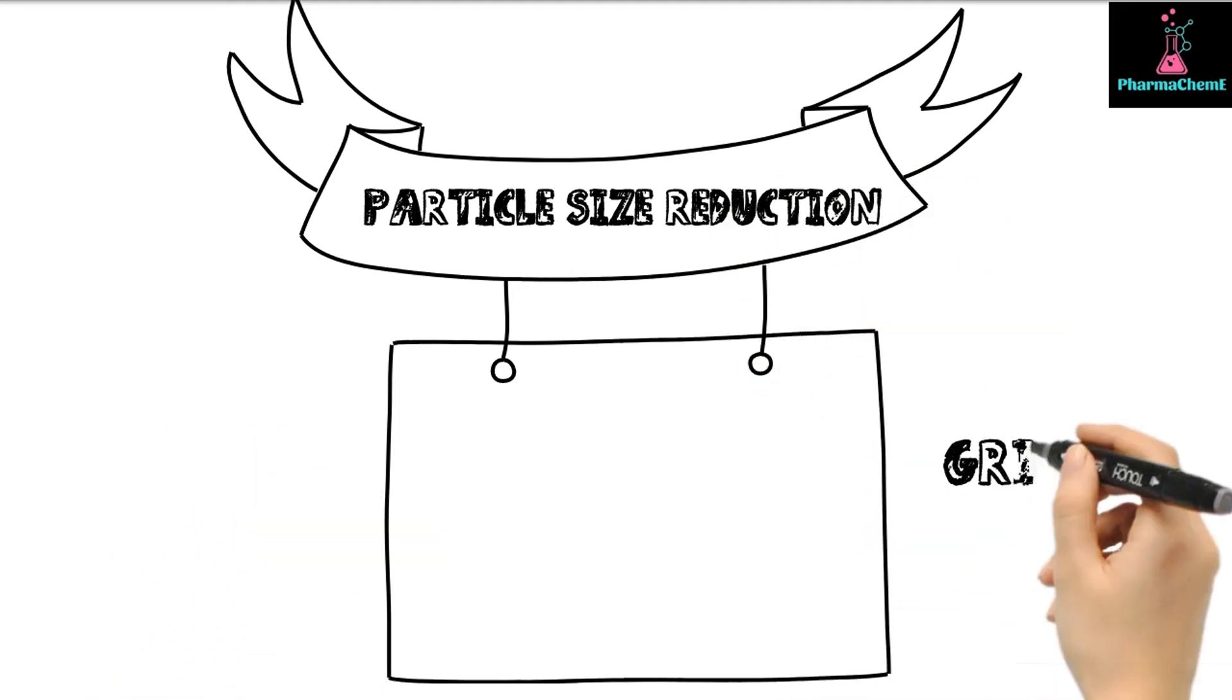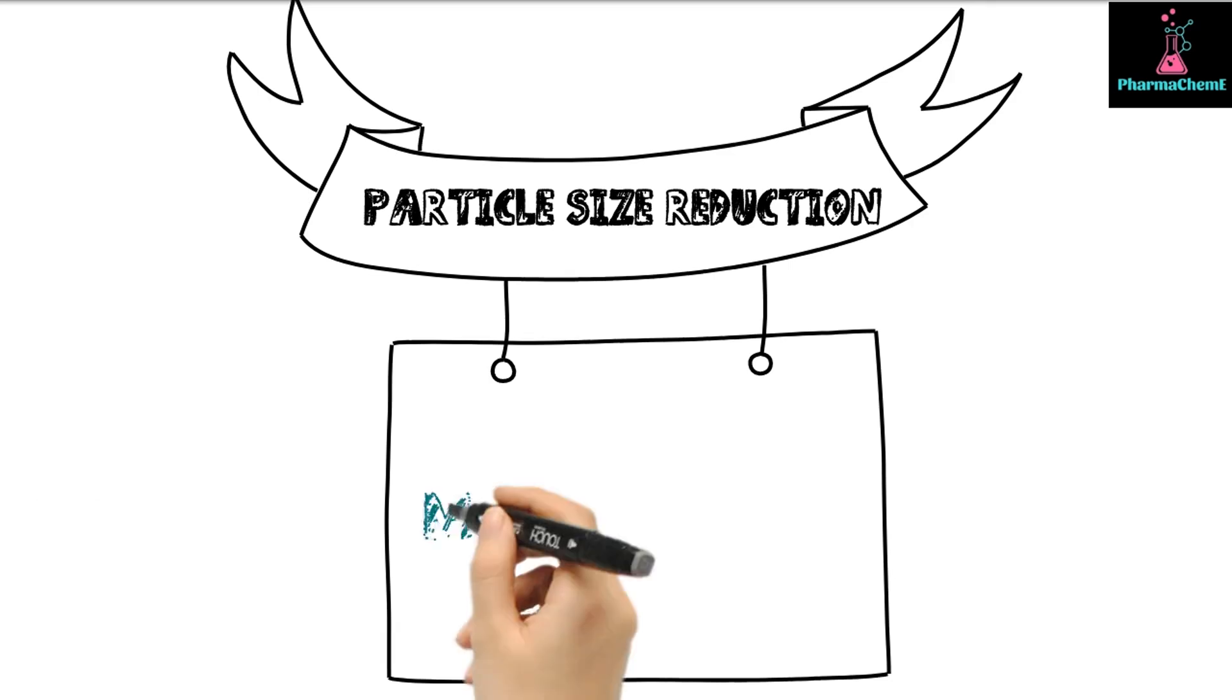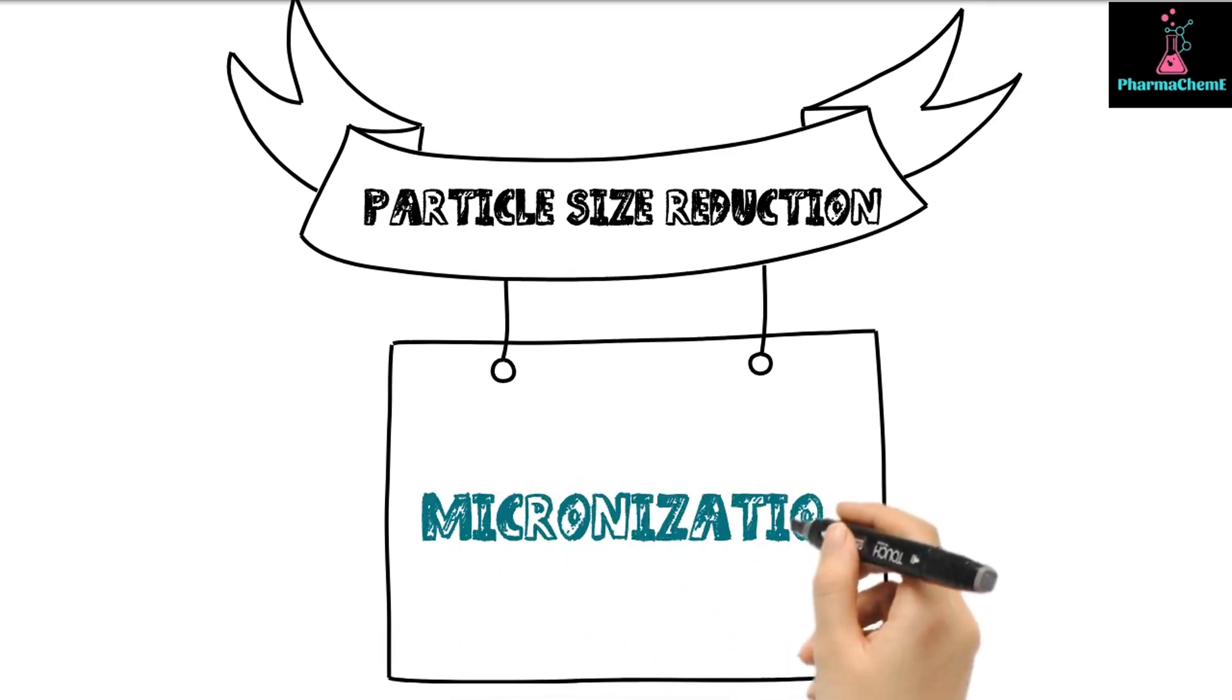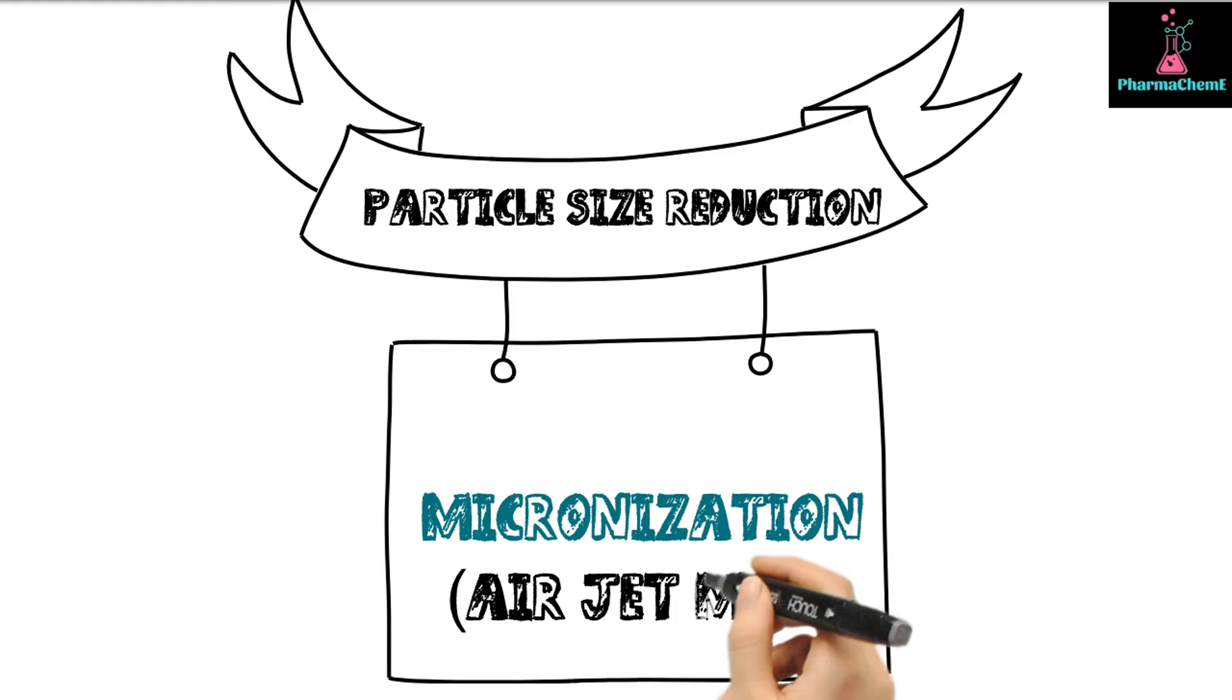There are various methods to achieve particle size reduction, but one particularly potent tool is micronization. This equipment utilizes mechanisms such as airjet mills, which will be our focus today.